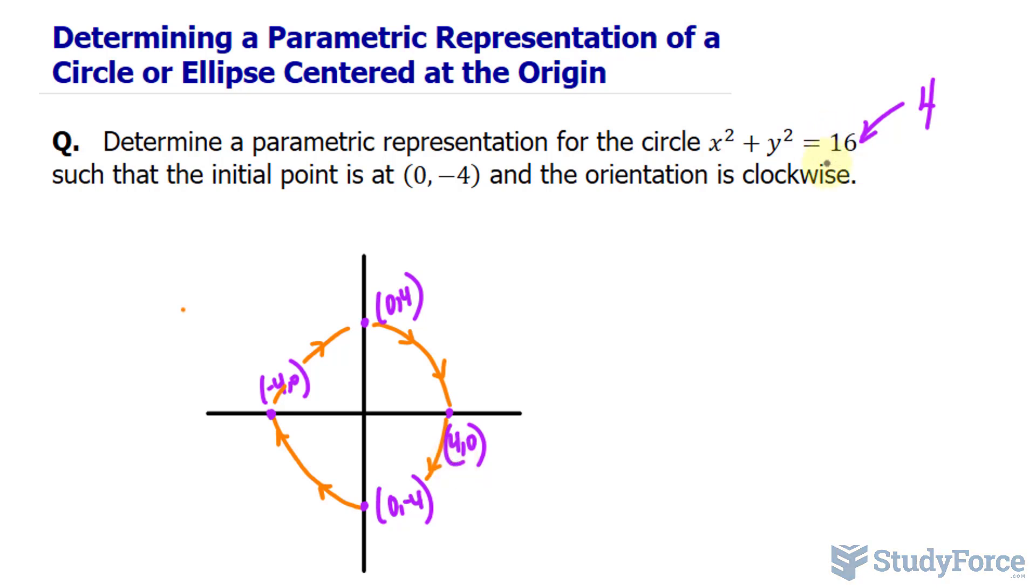So how do I make this equal to 1? I divide everything by 16. If I divide this by 16, I get x squared over 16 plus y squared over 16 is equal to 1.